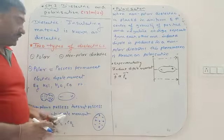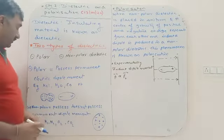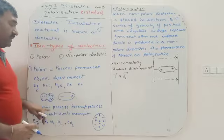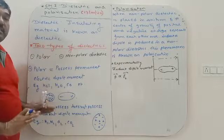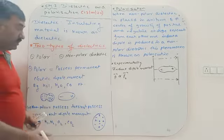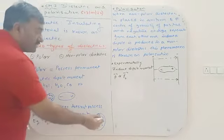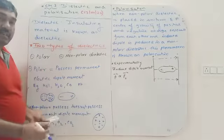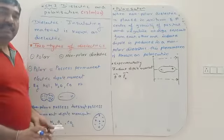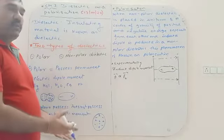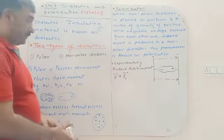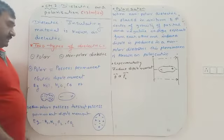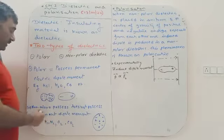In non-polar dielectrics, they do not possess a permanent electric dipole moment. The centers of negative and positive charges coincide with each other and are uniformly distributed. Examples include H₂, N₂, O₂, and CO₂.